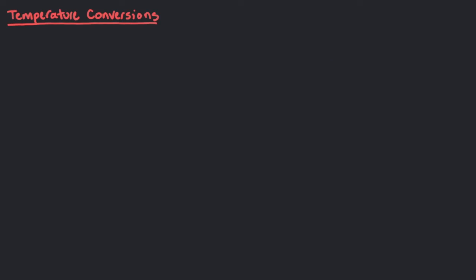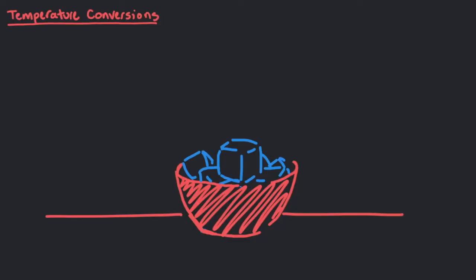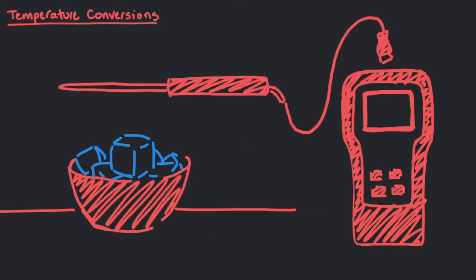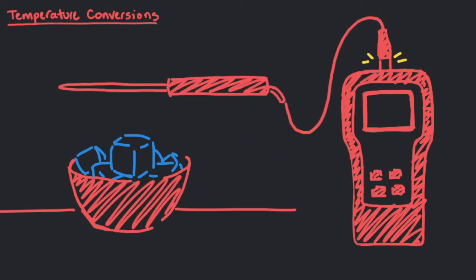He goes to the freezer to take some ice cubes out. The digital thermometer has a temperature probe attachment, so he connects it and places the probe in the bowl of ice cubes. After waiting a few minutes, the digital thermometer reads 0 degrees Celsius, and with a press of a button, it converts to 273.15 Kelvin.